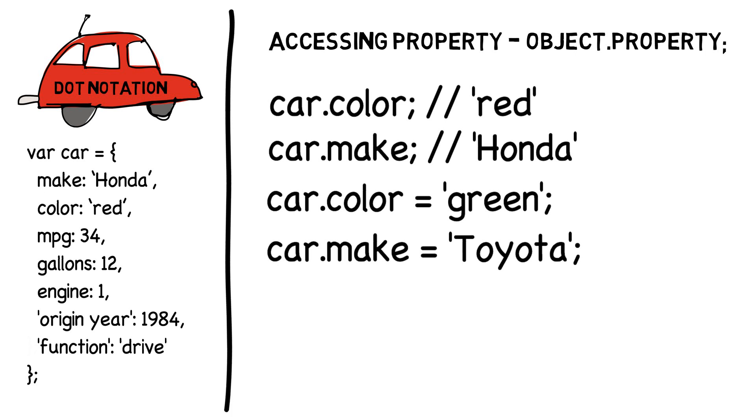We can access nearly every property in our object with dot notation. And in most cases, this is the preferable way to gain access to a property's value as it is much easier to type. But in some cases, dot notation falls short.